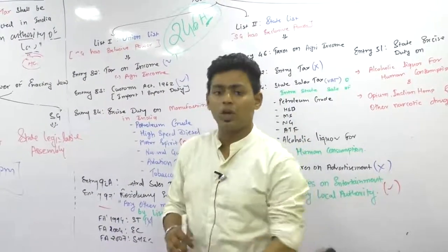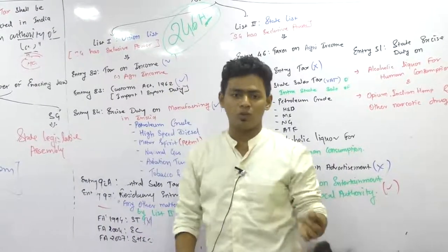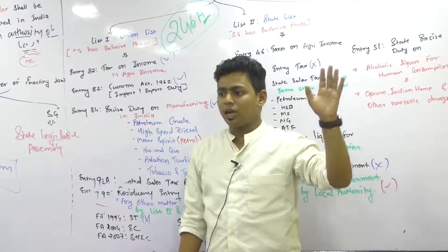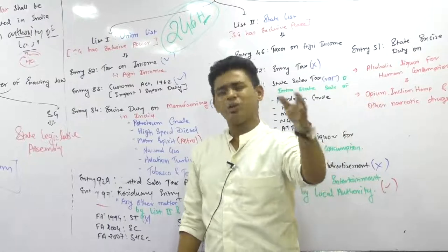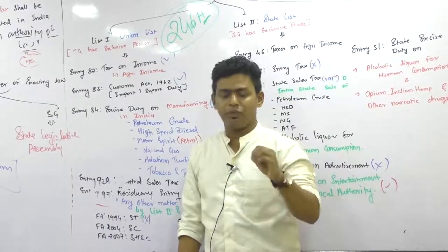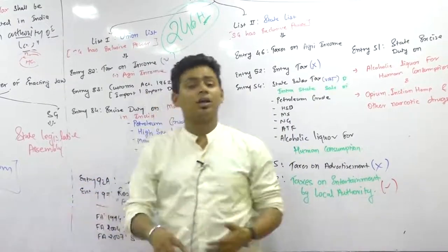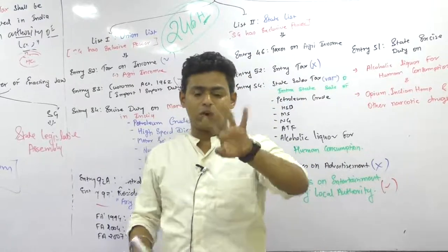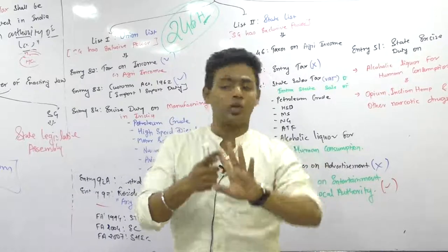Union territories like Dadra and Nagar Haveli, Chandigarh, Diu and Daman are small and do not have a state legislative assembly. For them, the central government has passed one act - UTGST. So there are four GST laws: CGST, SGST, IGST, and UTGST. We have to discuss all these laws in detail.